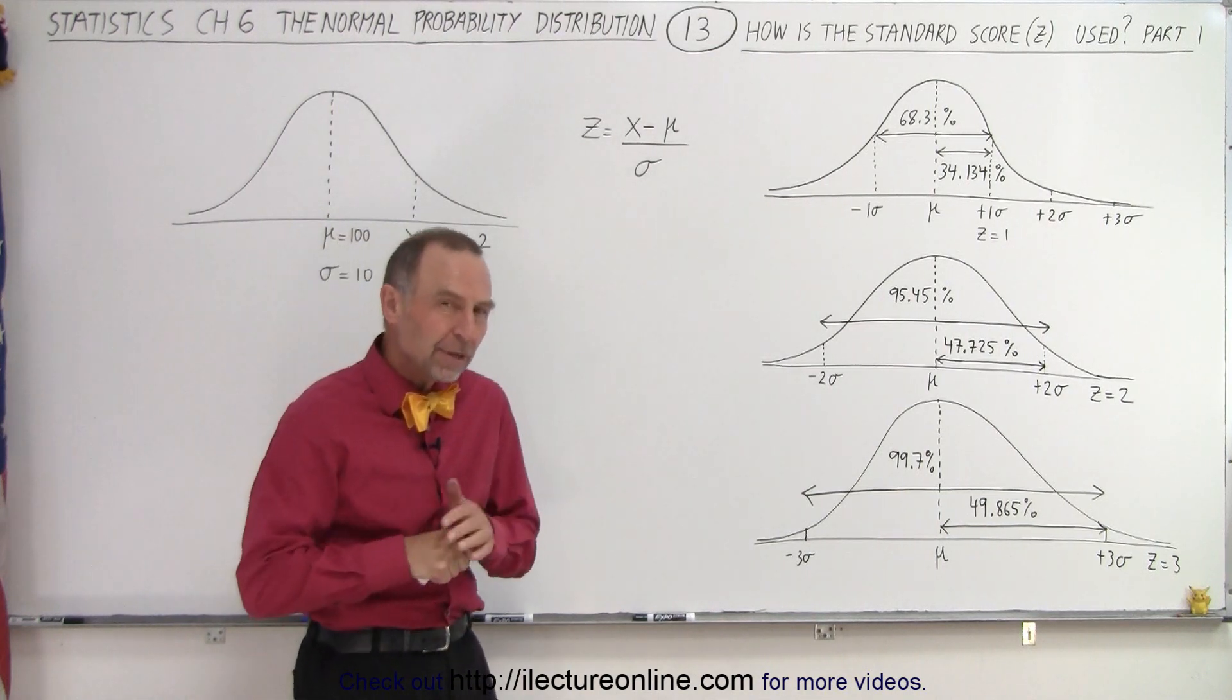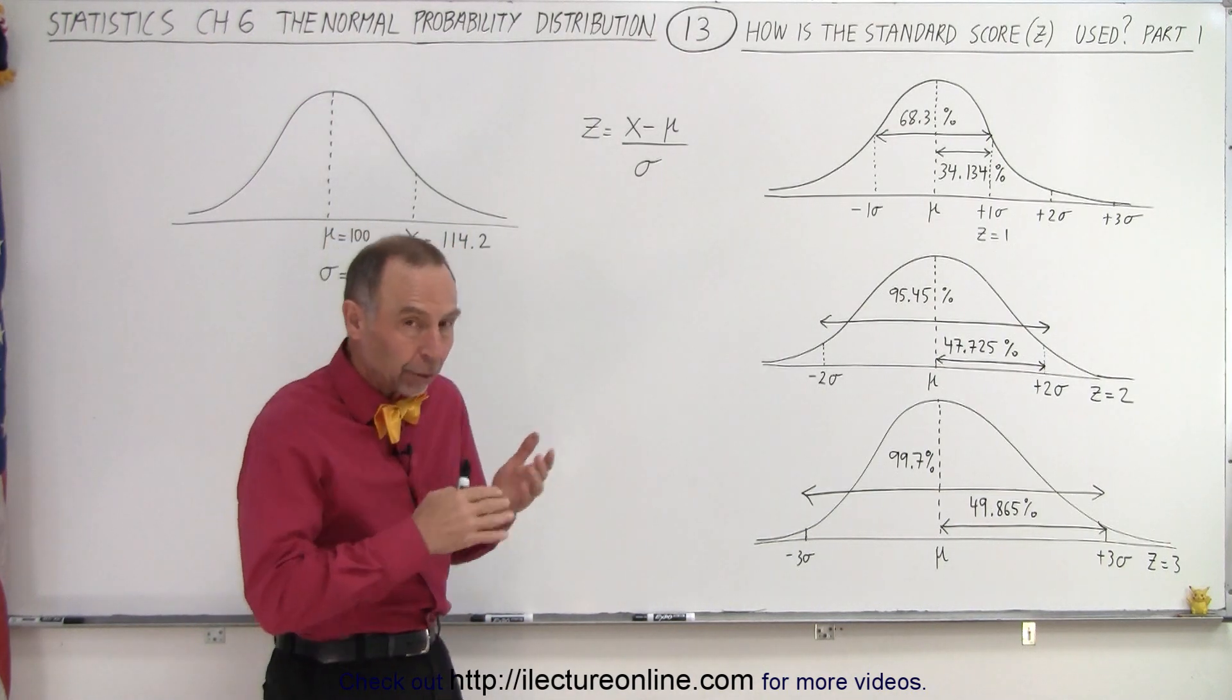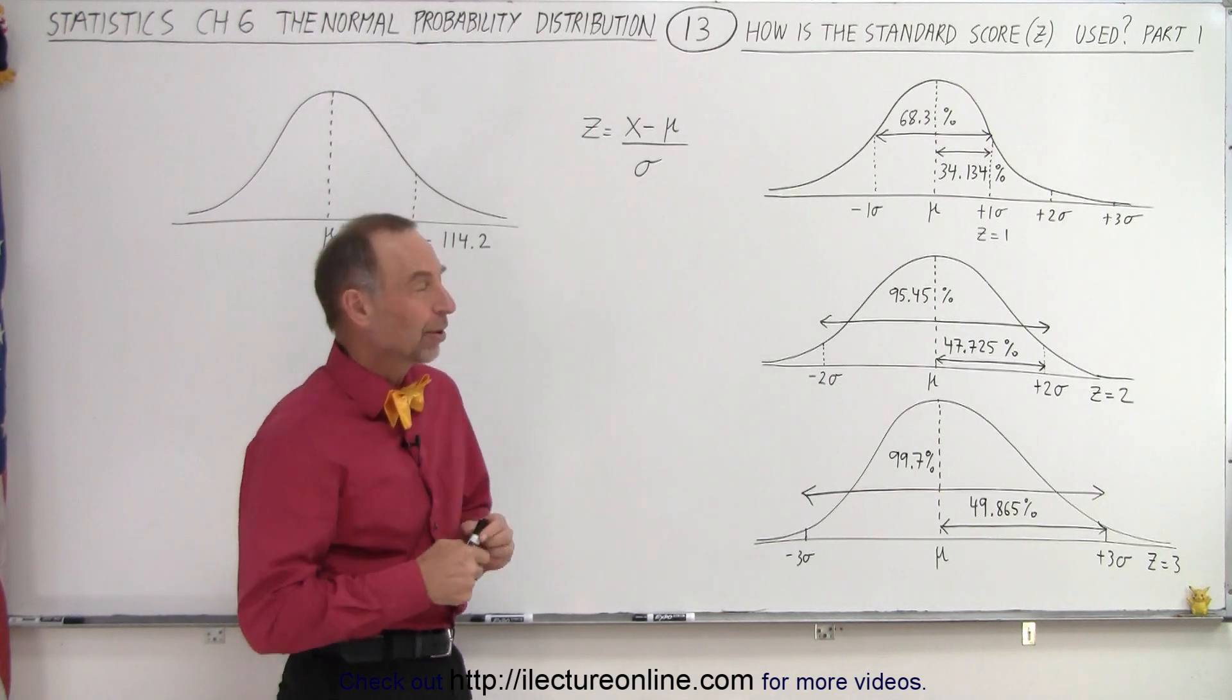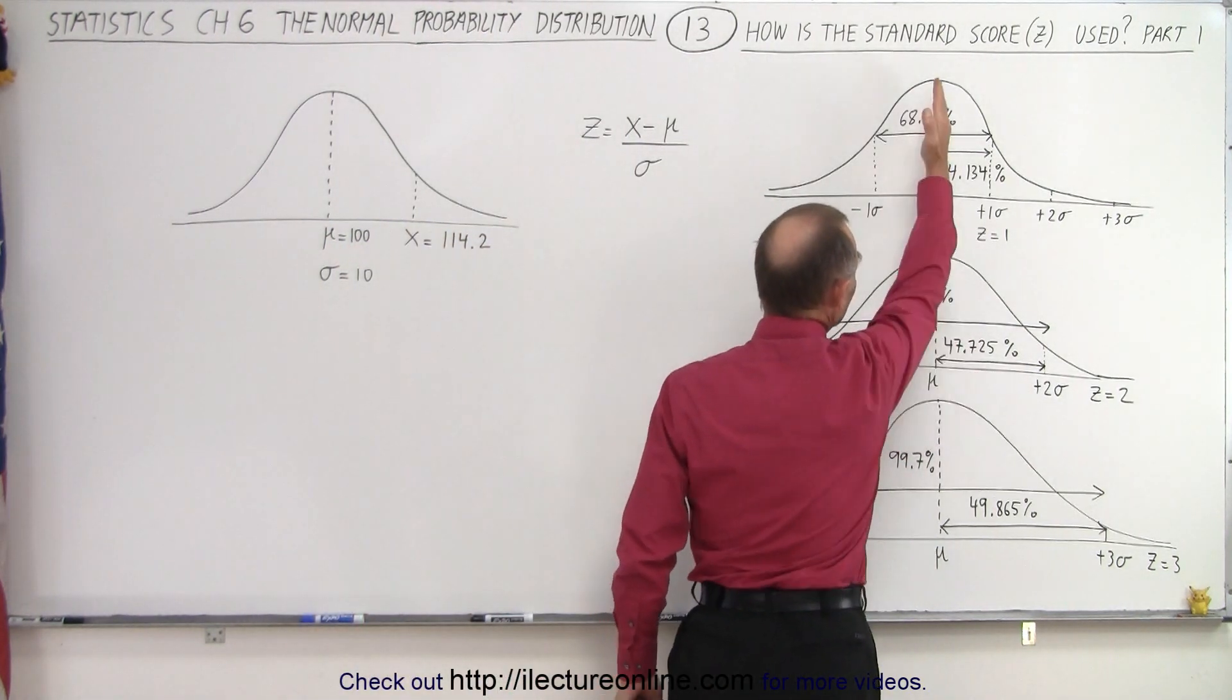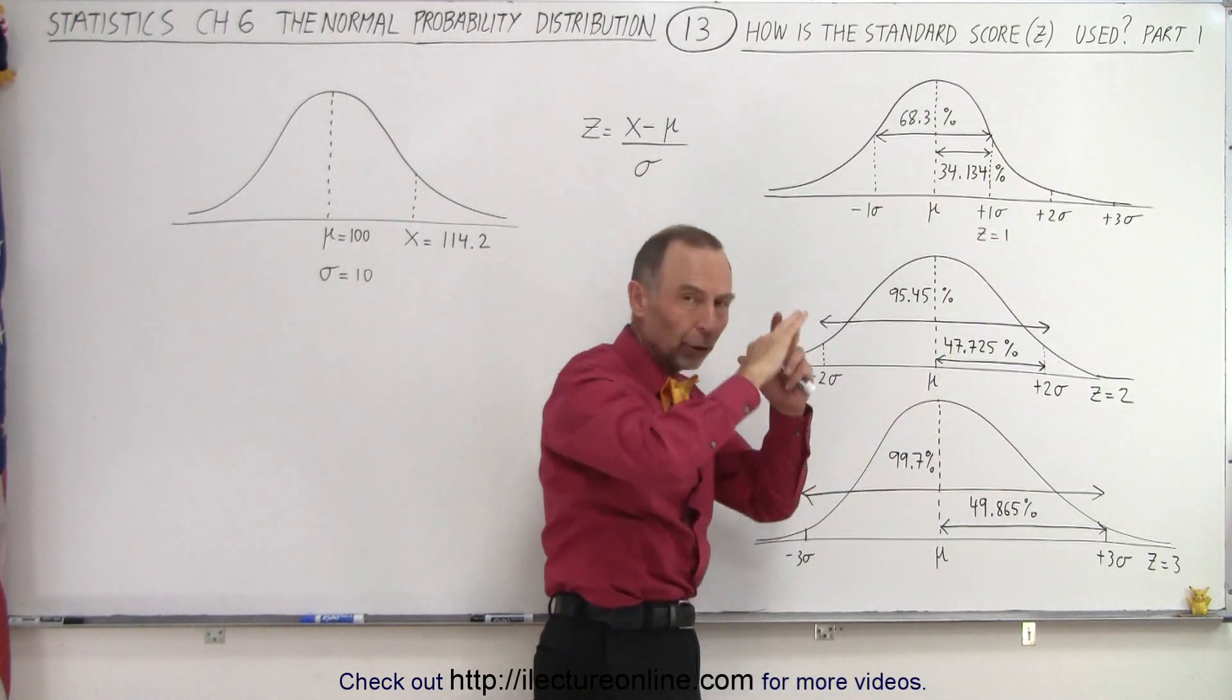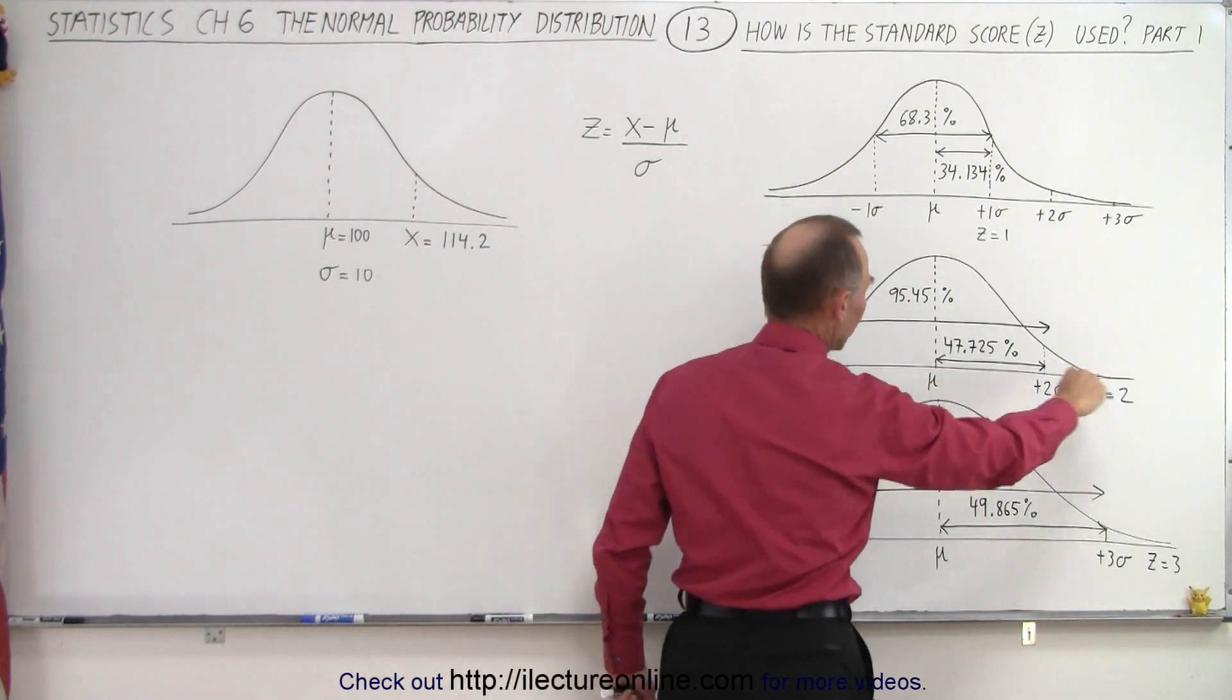We should be familiarizing ourselves with the standard way of looking at the normal distribution, and when we talk about plus or minus one sigma, plus or minus two sigma, or plus or minus three sigma. So here we have the three normal distribution curves, and notice that at the very top, in the middle here, we consider that the mean. If we have a normal distribution, both sides of the distribution will look exactly the same, and at the peak, we'll have the mean value on the horizontal axis.